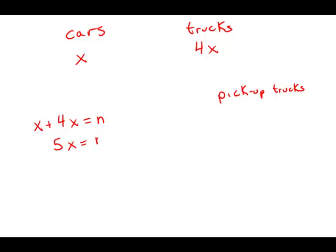Well, 5x equals n, so x equals n over 5, or another way to say that is one-fifth of n. The number of cars in the lot is one-fifth of n.